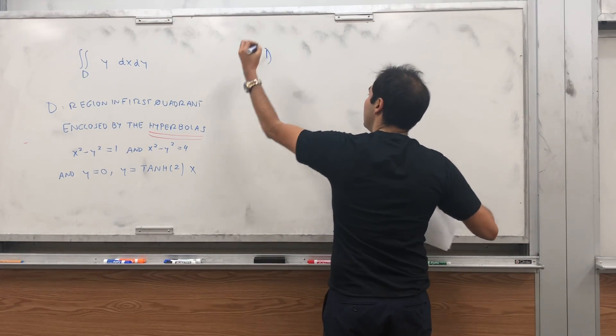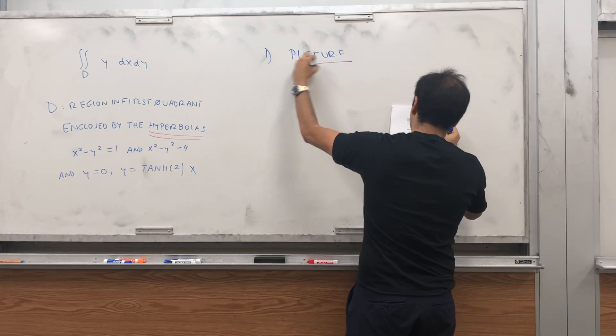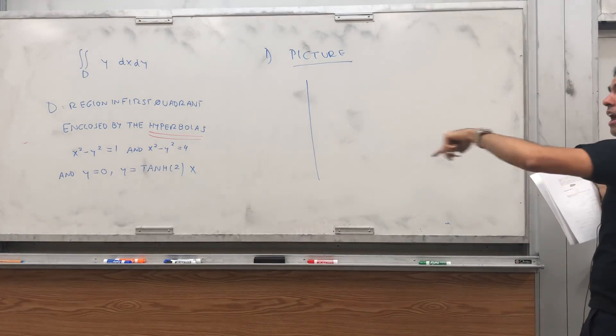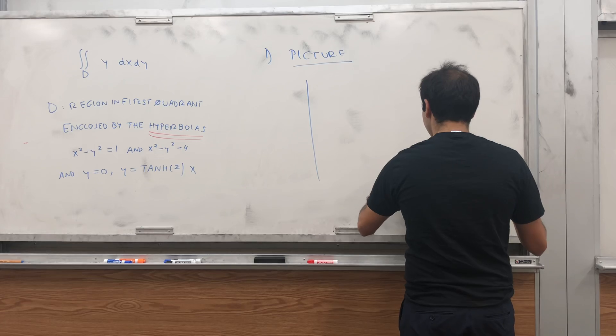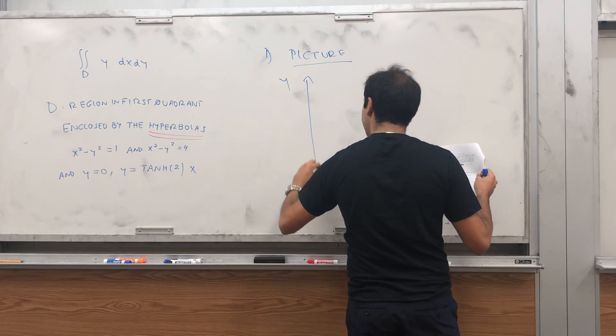So, let me first draw a picture of what's going on. So, what you're doing, you have this function y, and you want to integrate it over the following region d. So, this is x, y, and it's in the first quadrant.